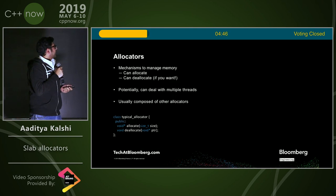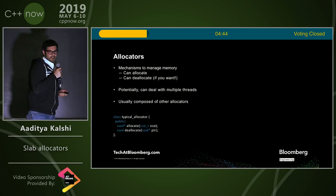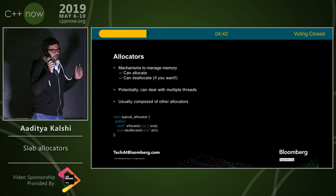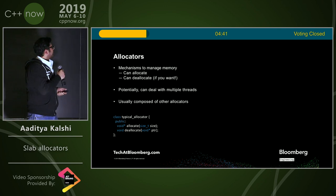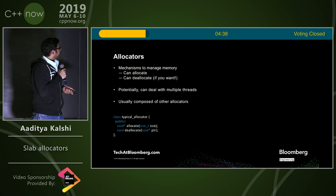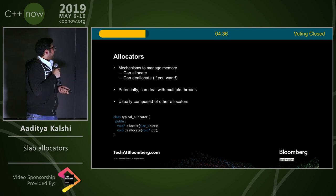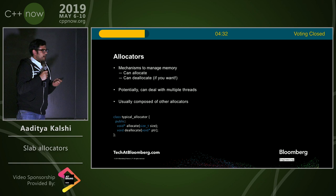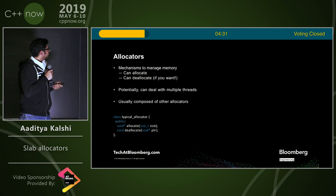Allocators are mechanisms to manage memory. They can allocate and deallocate — I'm sure everybody knows this. You might also want to deal with multiple threads. Allocators are usually composed of other allocators, and typically, complex allocators are highly layered.